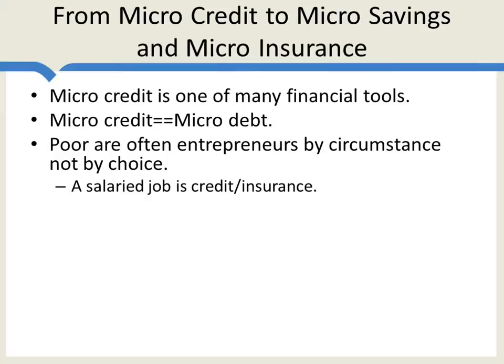Also, the vision we're presented with microcredit is of poor entrepreneurs creating new jobs and growing. But in the history of the world, countries don't become rich by creating a lot of micro-entrepreneurs — they typically become rich by industrialization, by creating a lot of jobs. The poor are often entrepreneurs by circumstance, not by choice. Or as David Rudman in Due Diligence puts it, microenterprise helps people to survive poverty more than to escape it.